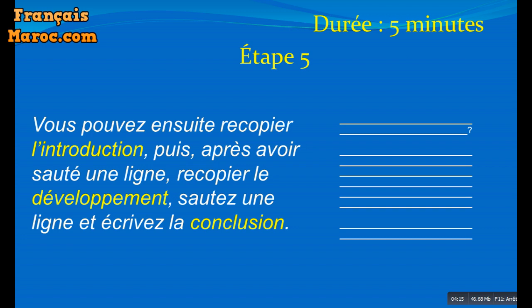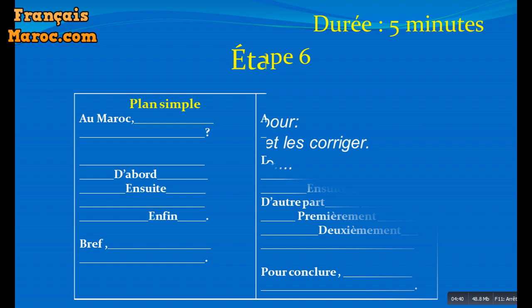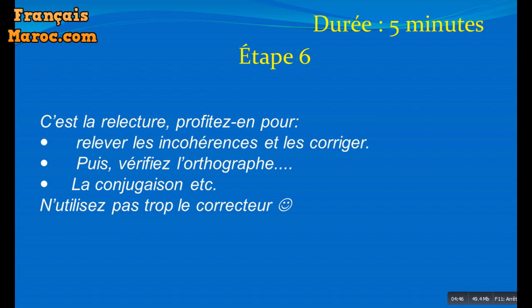Alors cinquième étape, ça va durer 5 minutes, c'est recopier ce que vous avez écrit dans votre brouillon sur la feuille de l'examen. Ça va vous prendre 5 minutes ou bien plus, 6 à 7 minutes. Voilà si vous voulez un canevas de ce que vous allez avoir après avoir écrit votre rédaction, soit vous adoptez un plan simple ou bien un plan dialectique.